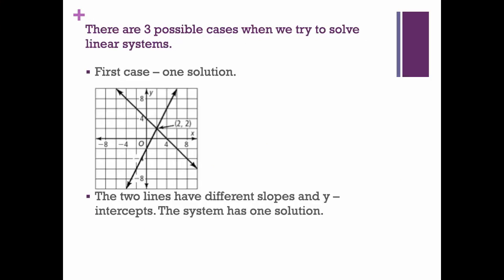When we solve linear systems graphically, there are three possible cases. The first case is what we did in the last two slides: we get one solution — the lines cross. When this happens, the two lines have different slopes and usually different y-intercepts. Generally you have two different slopes and two different intercepts. This is where we have one solution: the lines cross somewhere.